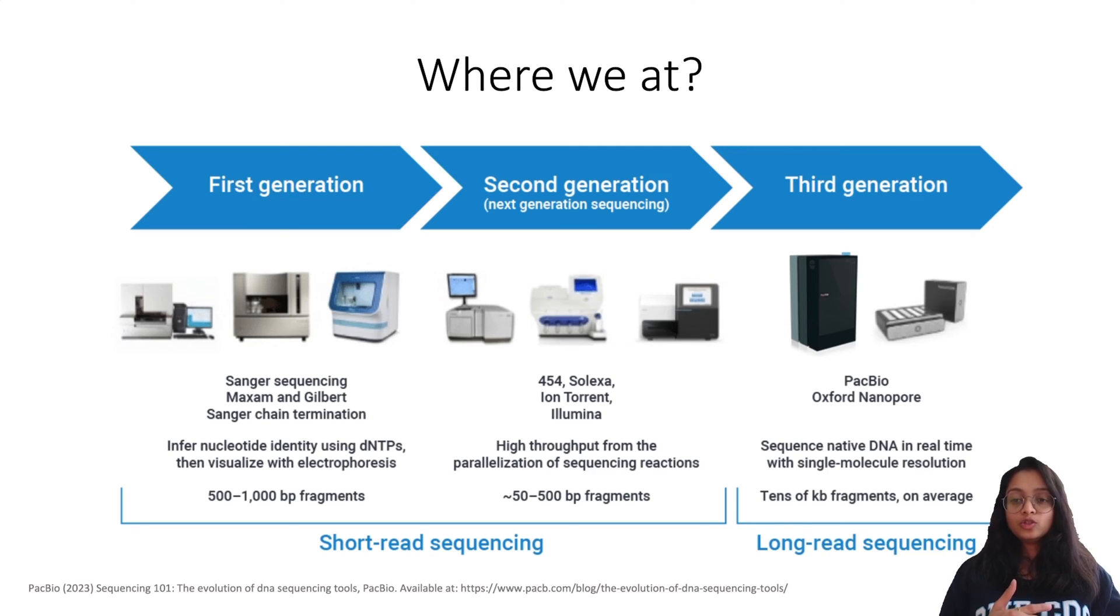Longer read lengths can be useful to resolve complex genomic regions, repetitive elements, and structural variations more effectively than shorter reads. They also facilitate accurate identification of large scale genomic rearrangements, duplications, deletions, and other structural variants. They can also be helpful in haplotype phasing, distinguishing alleles of the same chromosomes, providing more accurate information on genetic variation.